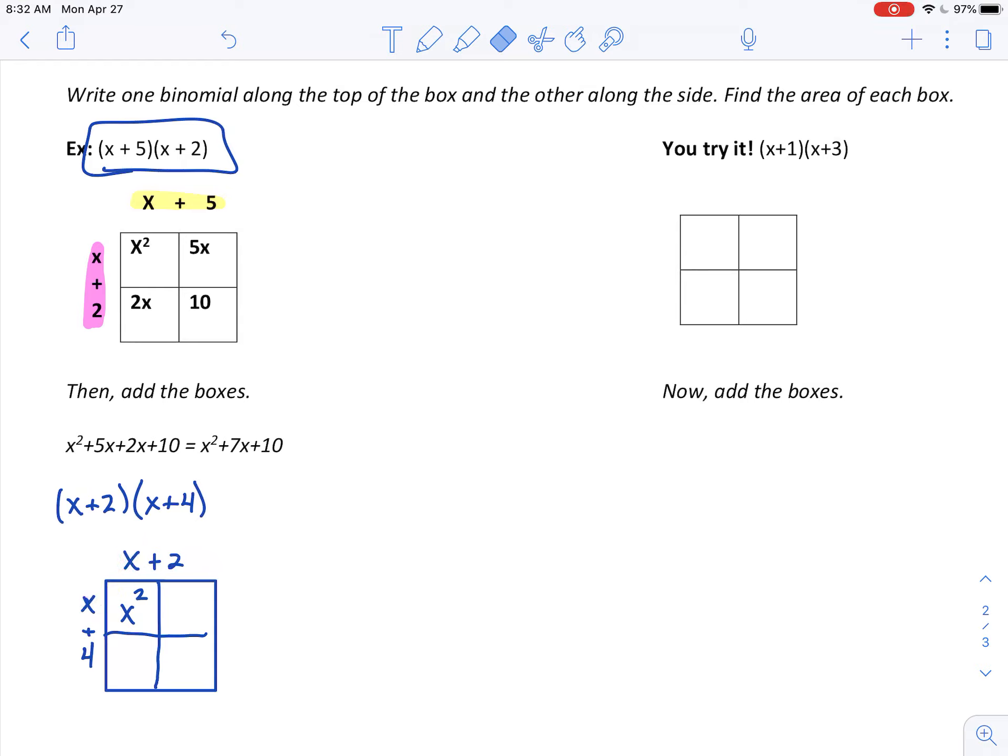So let's check out this first box. Well, my length is x. The other side is x. So x times x is x squared.